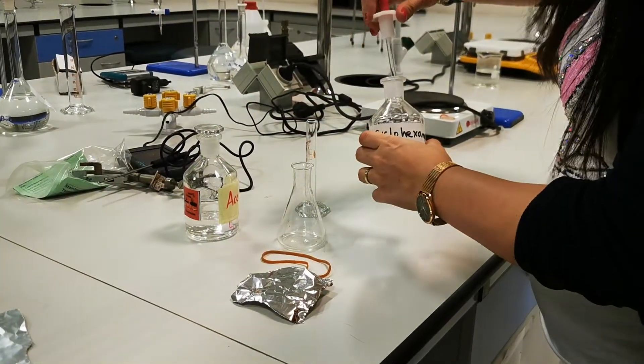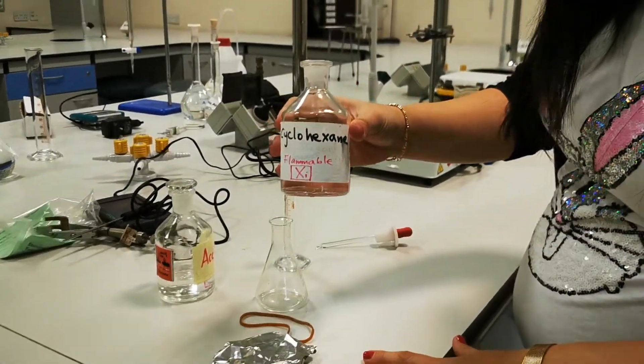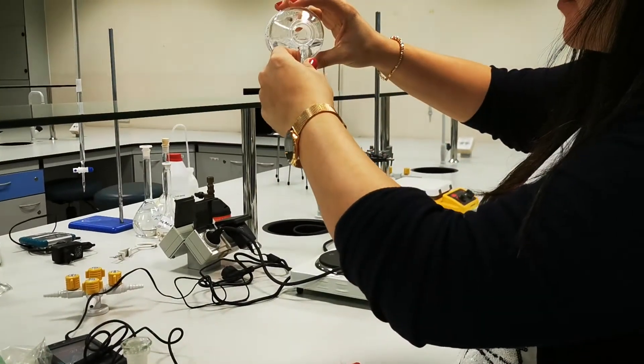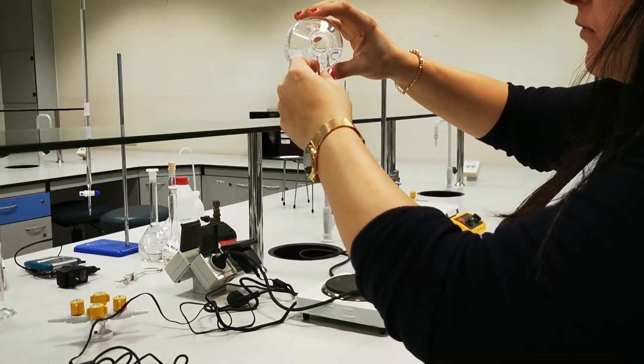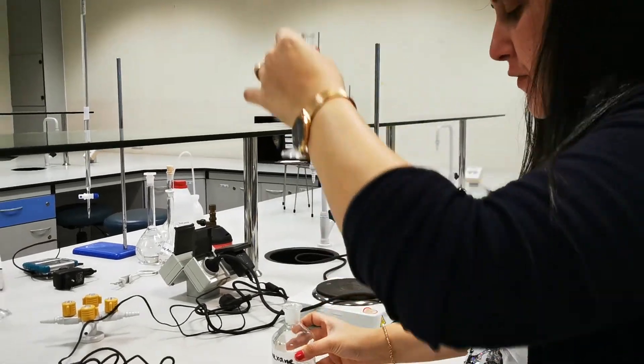I'm going to take now 5 milliliters of a volatile liquid. I'm choosing here the cyclohexane. So, this is 5 milliliters.